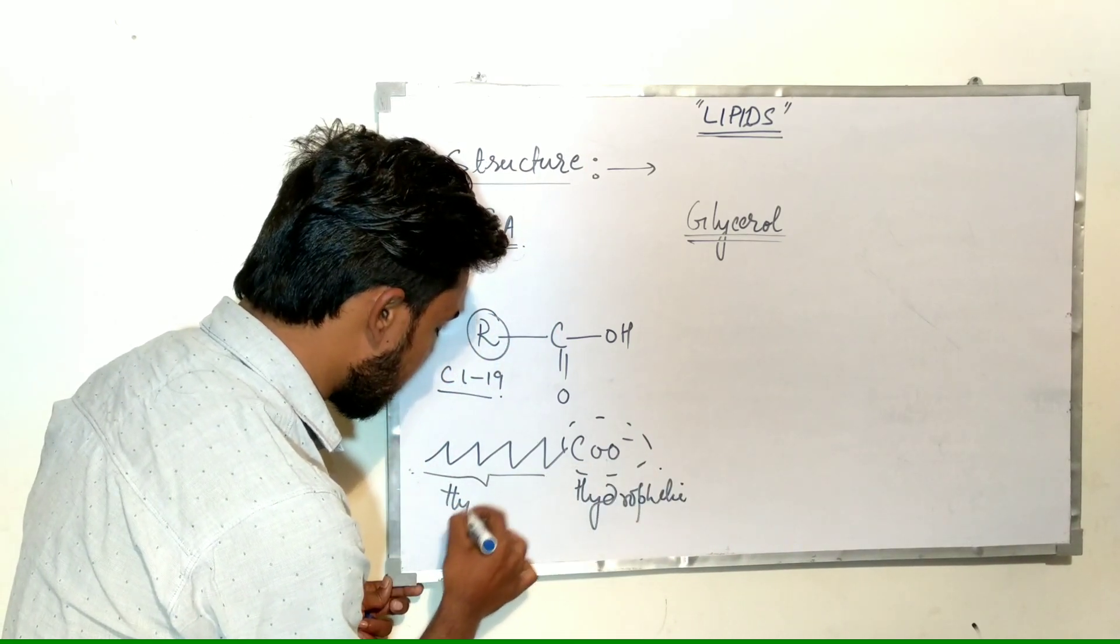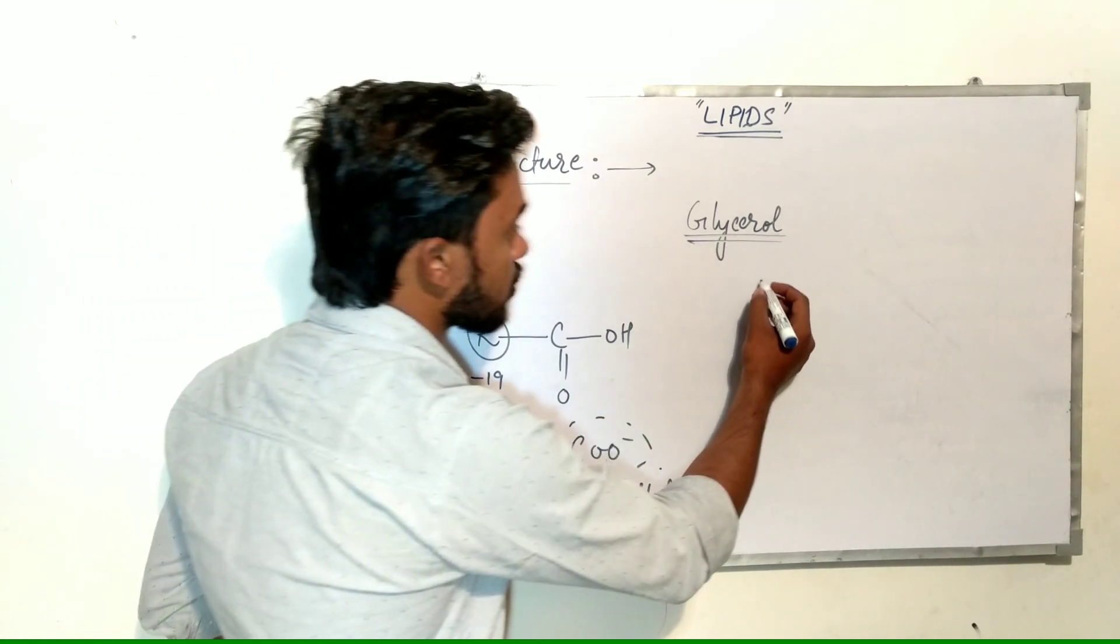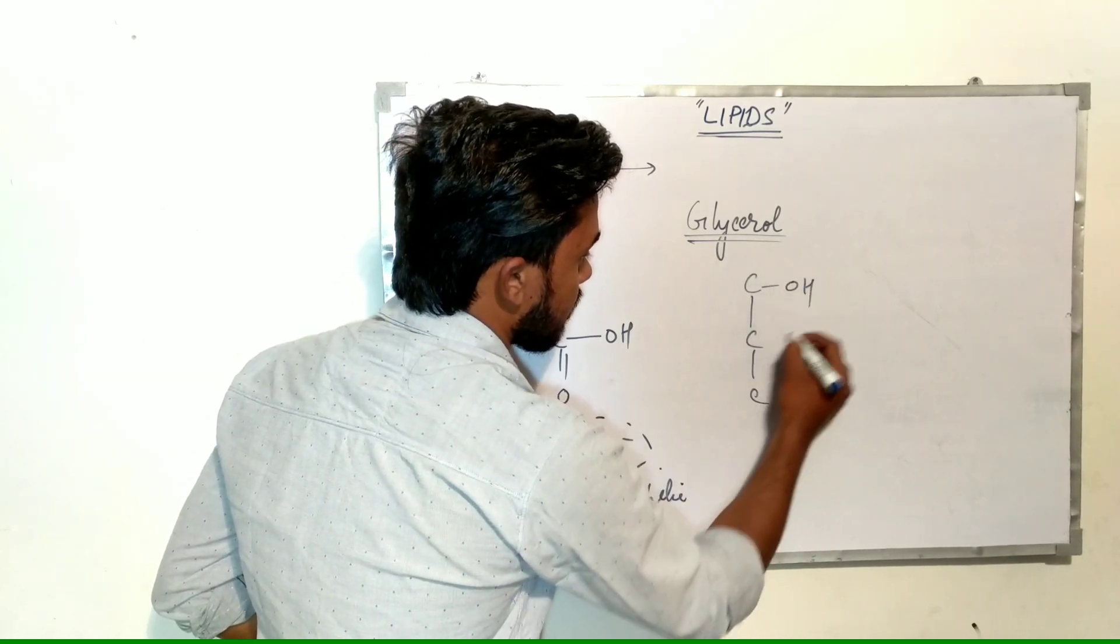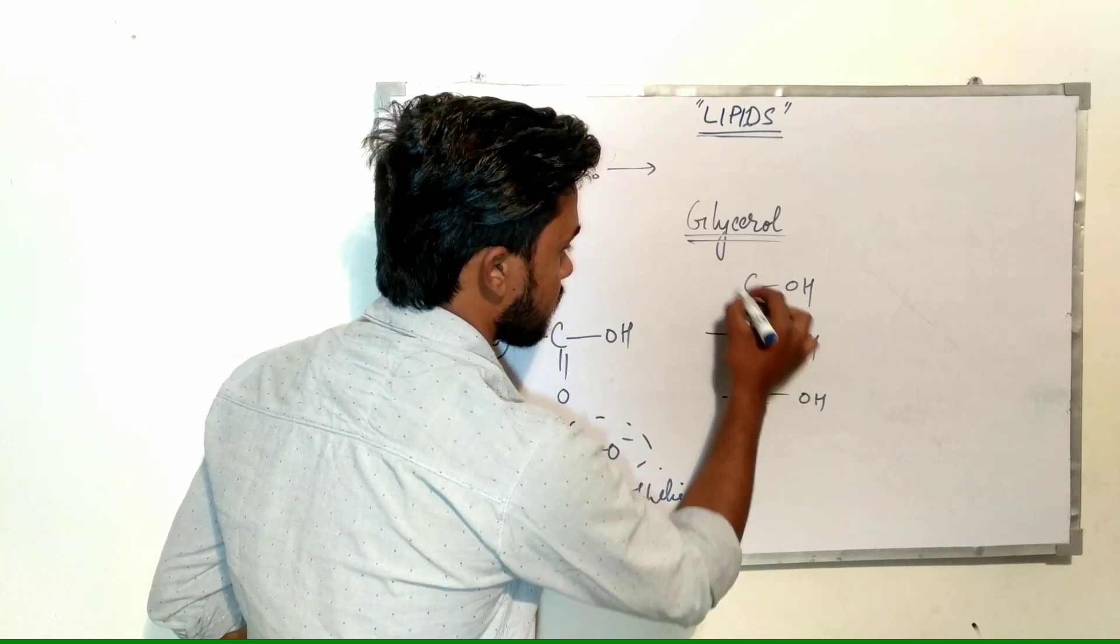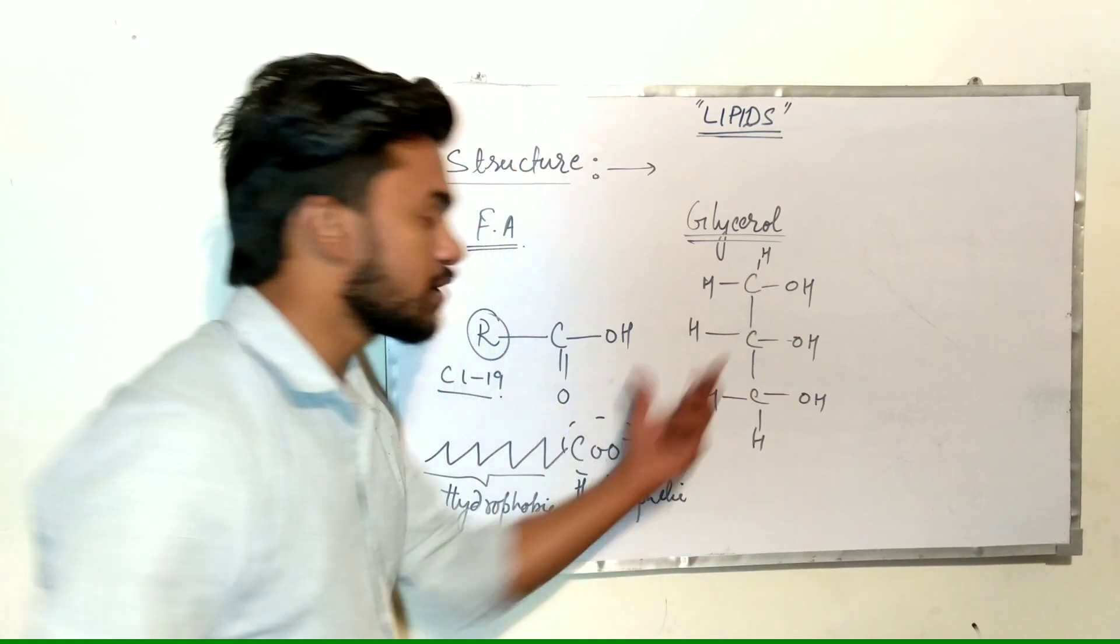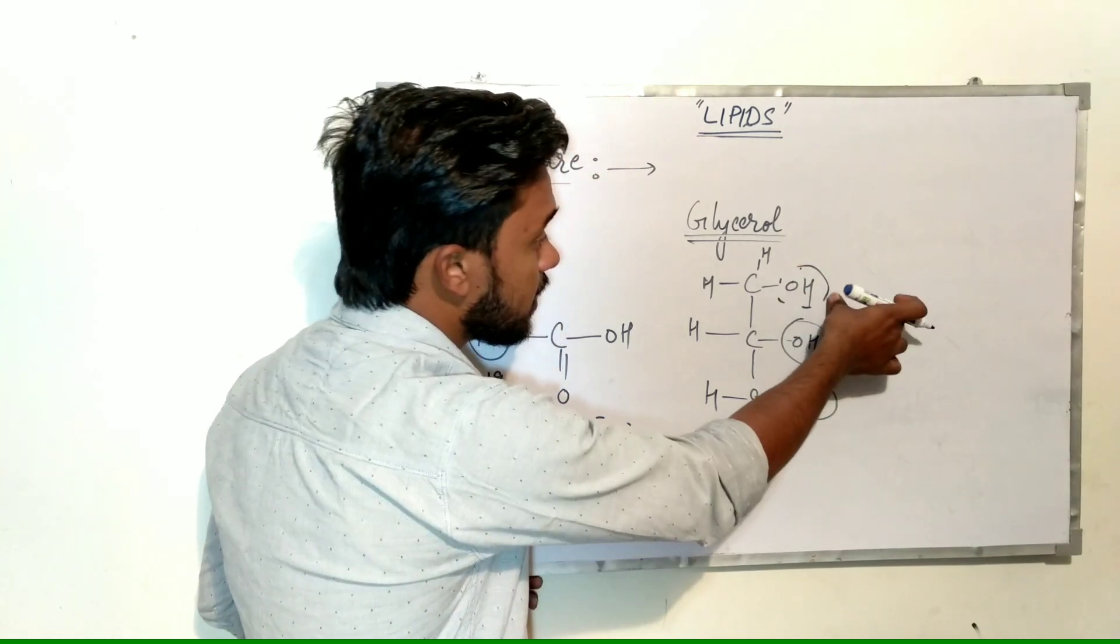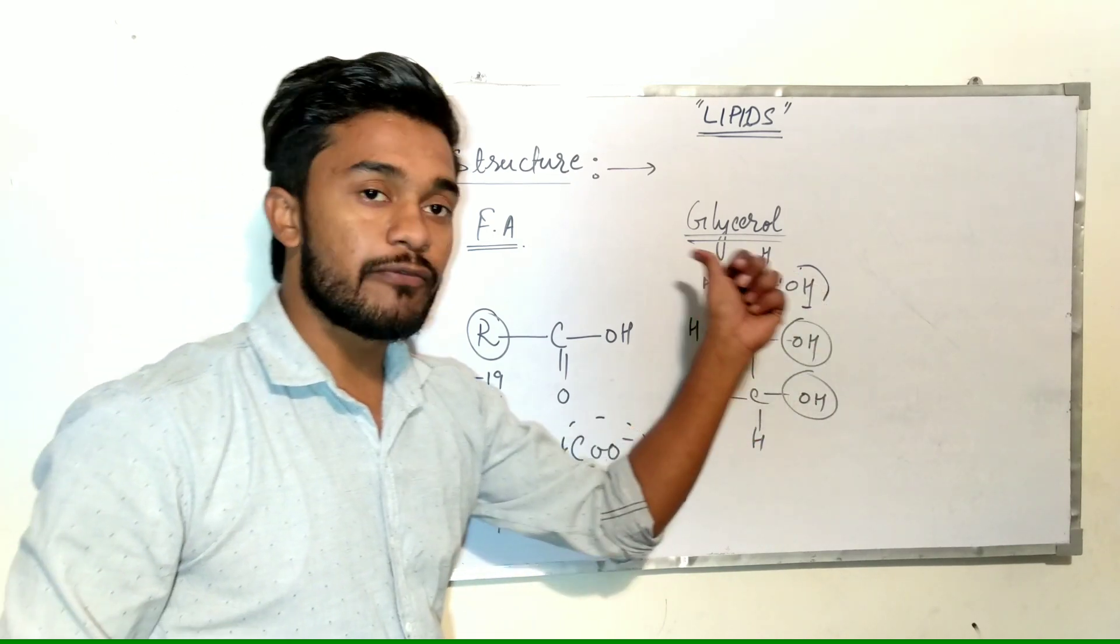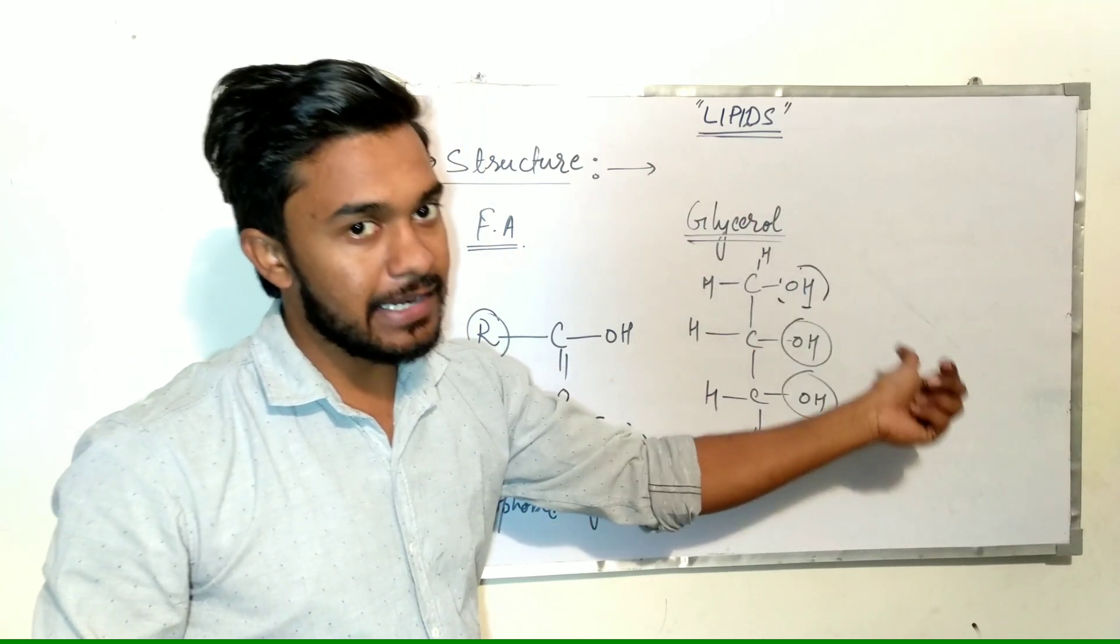Now, glycerol. Glycerol is a long chain alcohol that contains three carbons and three OH groups. These OH groups are replaced by fatty acids. Based on the number of fatty acids present in glycerol, it may be considered as monoglyceride, diglyceride, or triglyceride.